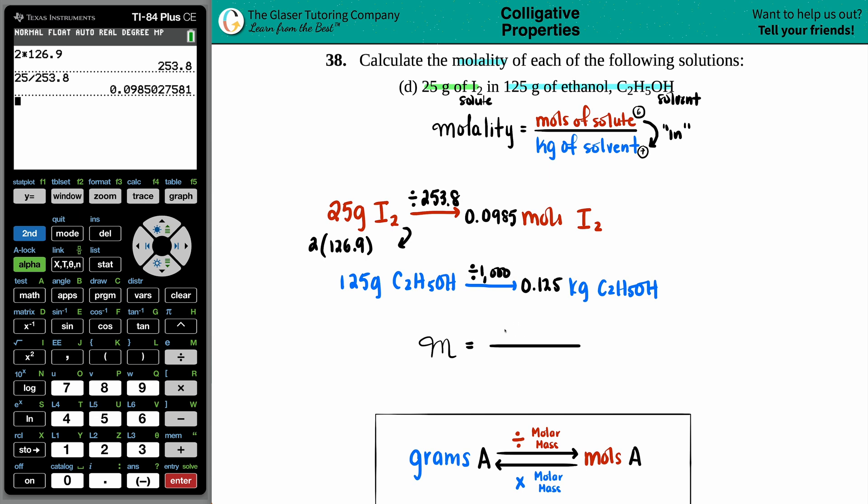So let's see, we got 0.0985 divided by 0.125. And maybe I'll just put this over here because then the answer is going to go on the right-hand side. So I'm just going to take this whole number and divide it by 0.125. And there we go.